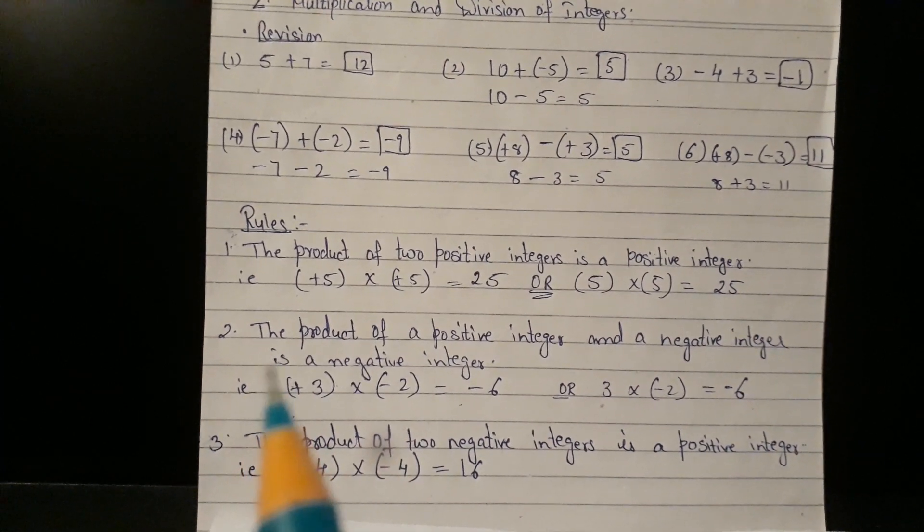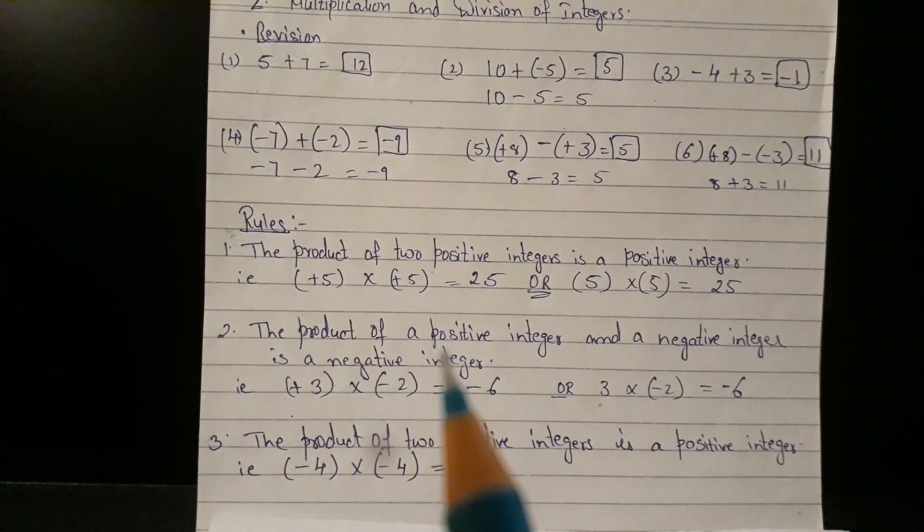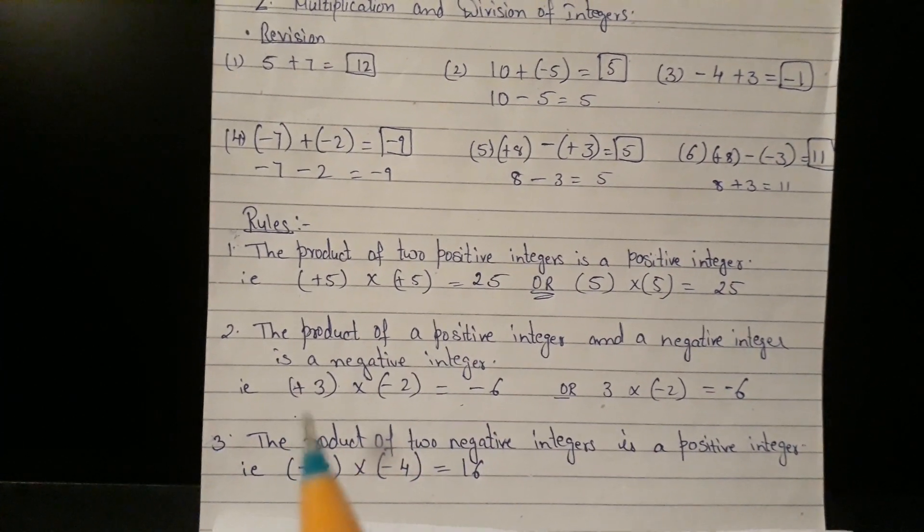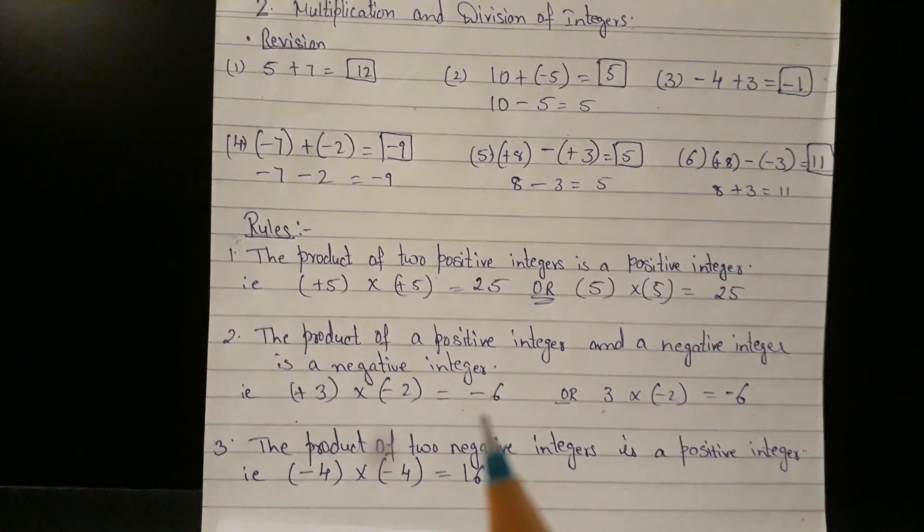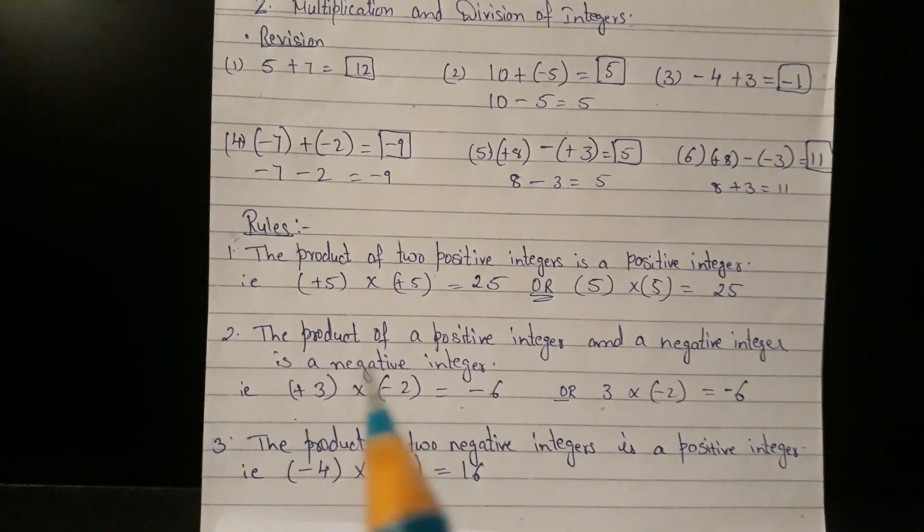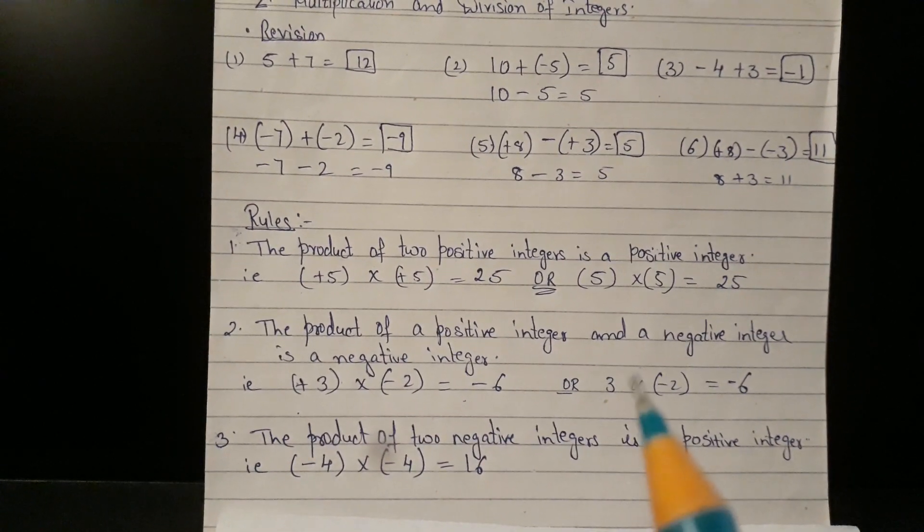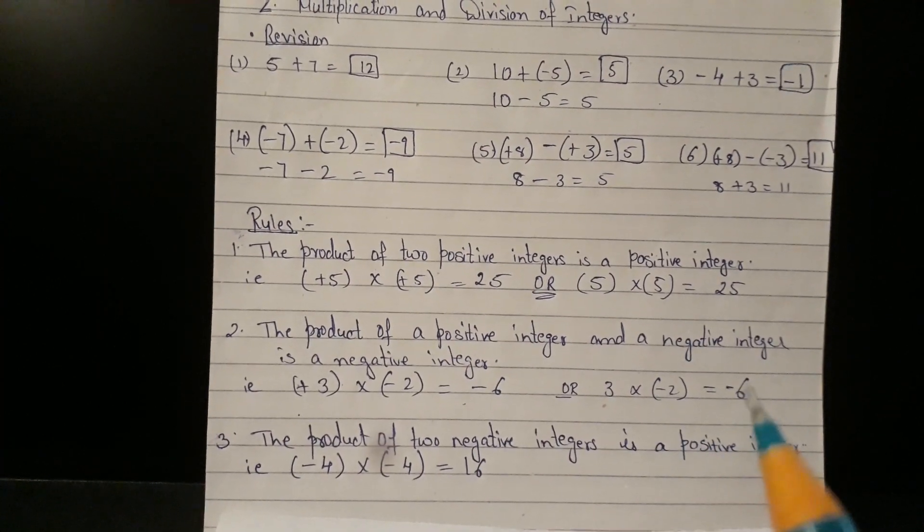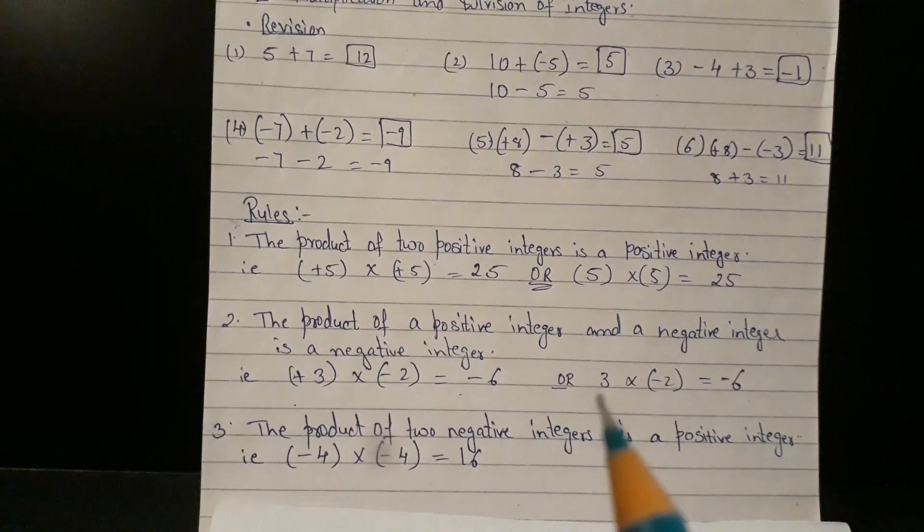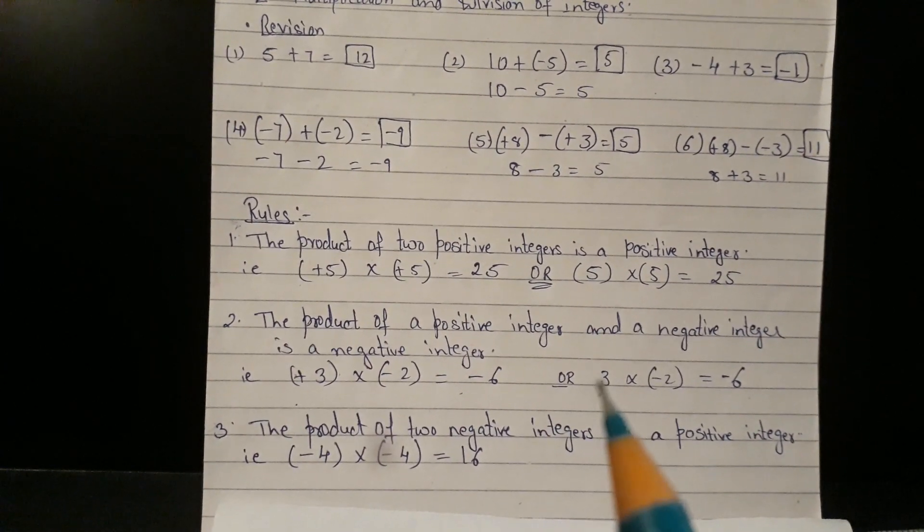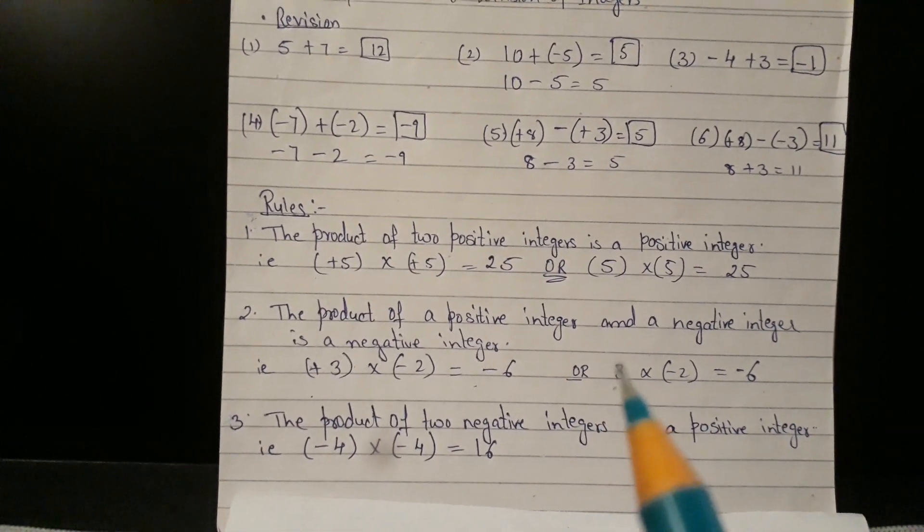Second rule, the product of a positive integer and a negative integer is a negative integer. It means, plus 3 into minus 2 will give me answer as minus 6. Why? Because plus into minus, minus. Or it could also be written as 3 into minus 2. So 3 2's are 6. And plus into minus, minus. There is no mention of sign here. But we all know that when there is no sign mentioned, it is accepted as plus.